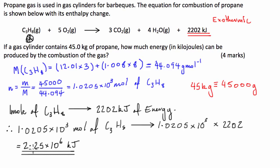So 2.25 times 10 to the power of 6 kilojoules is going to be produced. Because it's exothermic, it's not going to be absorbed, it's going to be released to its surroundings. So the barbecue is going to be supplied with 2,250,000 kilojoules of energy.